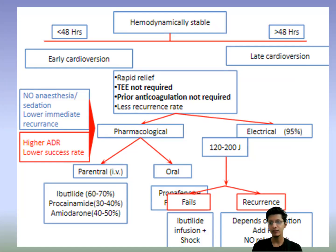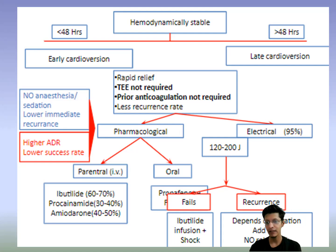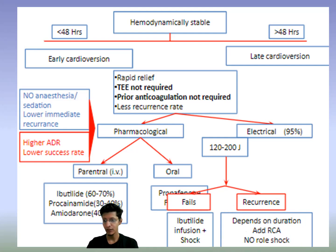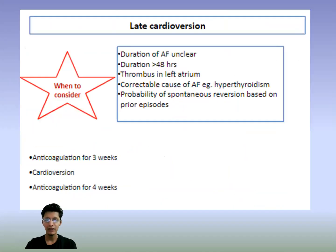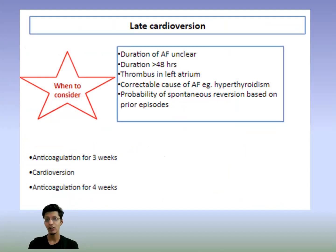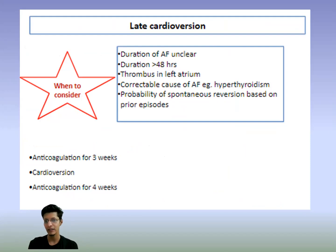For electrical cardioversion, start from 120 to 200 joules. If it fails, give an ibutilide infusion. If the rhythm is weakening, there is no role for ibutilide as such. For late cardioversion — if the patient presents after 48 hours — you cannot cardiovert immediately. Since the duration is often unclear and thrombus may be present in the left atrium, transesophageal echo has a very important role.